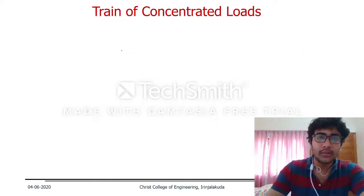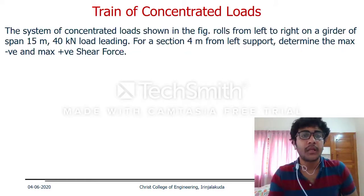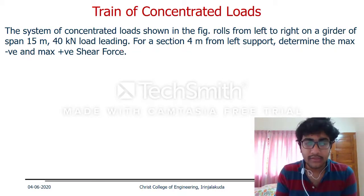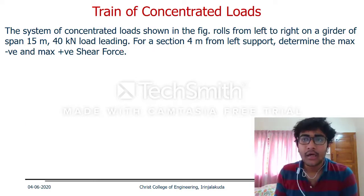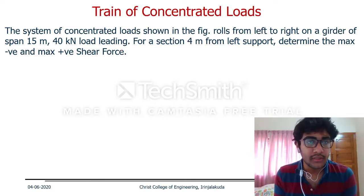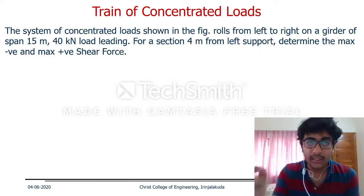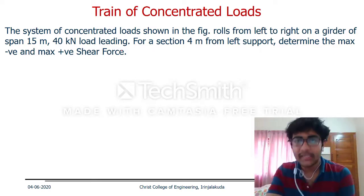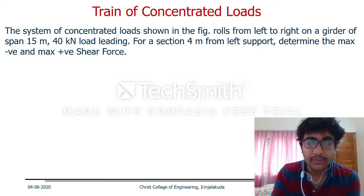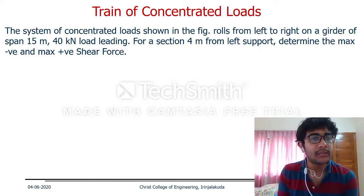Now let's look at the problem. We have the system of concentrated loads shown in the figure. It rolls from left to right on a girder of span 15 meters. The loads are 40 kN, 32 kN, and 40 kN. For a section 4 meters from the left support, determine the maximum negative and maximum positive shear force.